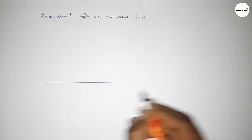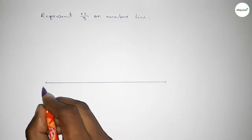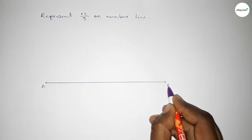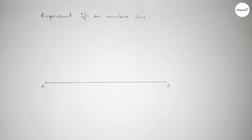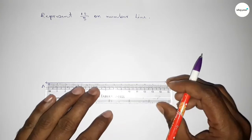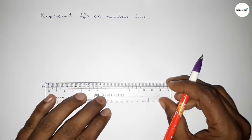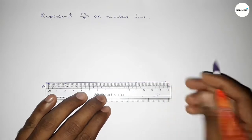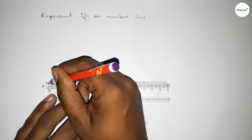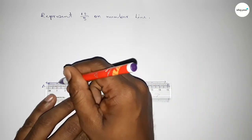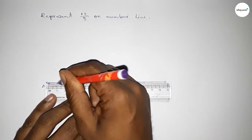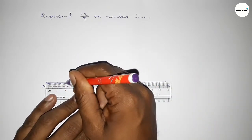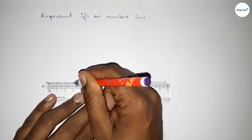First of all, we have to draw here the number line. So first, drawing here a line and taking arrow marks on both sides. This is a line. Next, we have to mark the numbers on the line by using a scale, by this way.